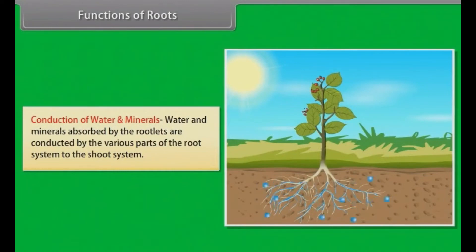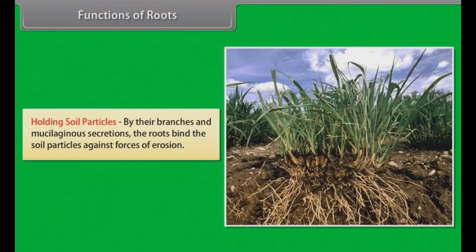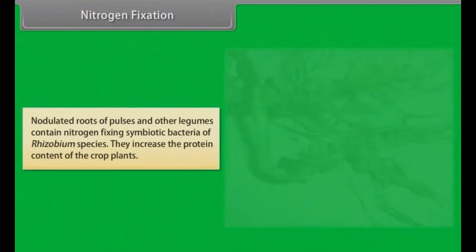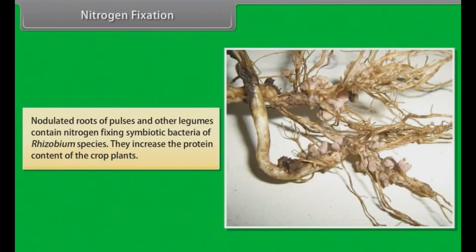Conduction of water and minerals: Water and minerals absorbed by the rootlets are conducted by the various parts of the root system to the shoot system. Holding soil particles: By their branches and mucilaginous secretions, the roots bind the soil particles against forces of erosion. Hygroscopic roots: Young prop roots of banyan and epiphytic roots are specialized to absorb water from damp air. Nitrogen fixation: Nodulated roots of pulses and other legumes contain nitrogen-fixing symbiotic bacteria of Rhizobium species. They increase the protein content of the crop plants.